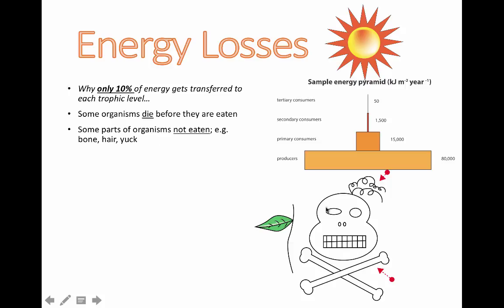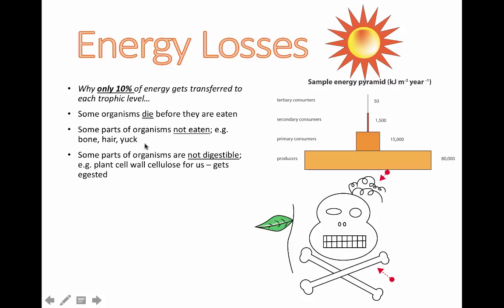Some parts of organisms are not actually eaten. Our skull and crossbones help illustrate this — when things die, most of their meat can be eaten by other animals, but a lot of the bones get left over. Yet that original animal used energy to create those bones. So because parts like bones or hair are not eaten, the energy stored in them doesn't go to the next level either.